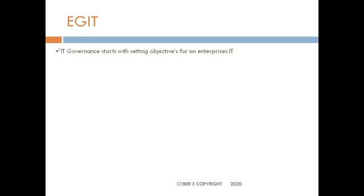The starting point for IT governance — governance cannot start on its own. Objectives for the organization need to be set first. For example, an organization might set an objective to achieve 600 billion dollars of turnover by a certain date. From that organizational objective, the enterprise IT objectives are then derived.